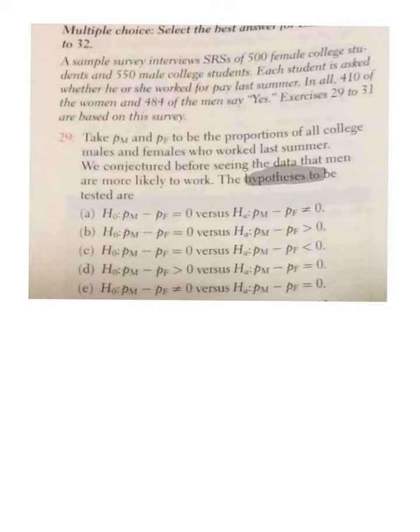We can probably rule out the last two because the null hypothesis, the first one, H-0, they should be equal to zero. We always assume that, remember, no change, no difference is the null hypothesis versus what we are trying to prove.